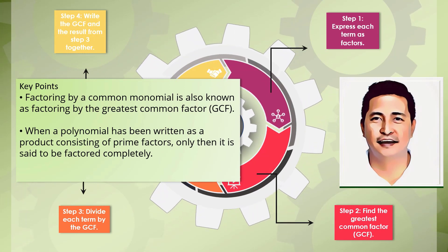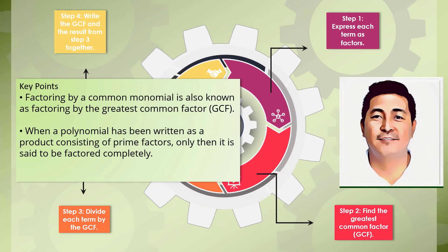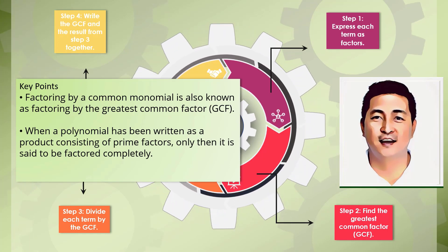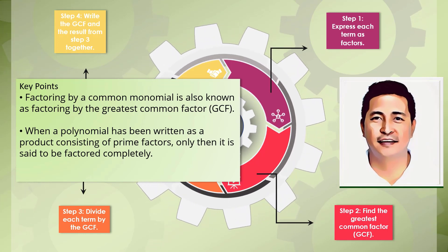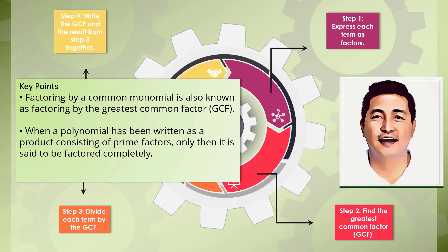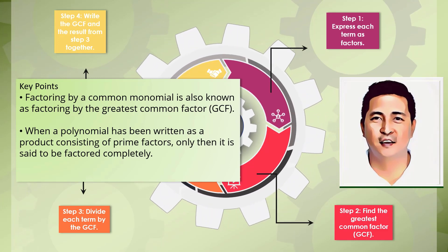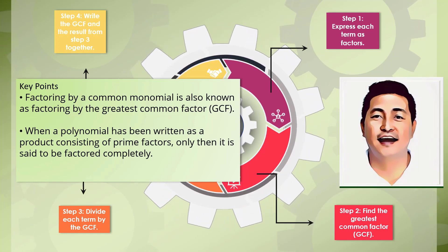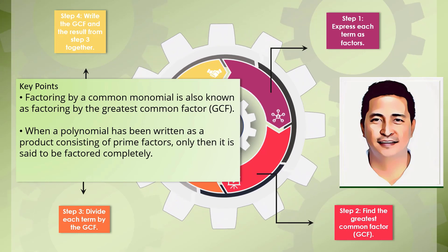I am sure that you already have mastered the skills in factoring. Just additional tips for you: factoring by a common monomial is also known as factoring by the greatest common factor, or GCF. When a polynomial has been written as a product consisting of prime factors only, then it is said to be factored completely. I hope you enjoyed our video lesson for today. Watch out for more video lessons in mathematics. I have included some exercises on the next slide for you to solve. Try these on your own and compare your answers on the link given below. Stay safe everyone and never stop learning mathematics. This is your mentor, Sir Eric, signing off.